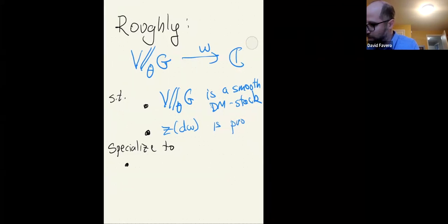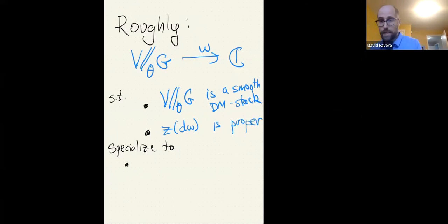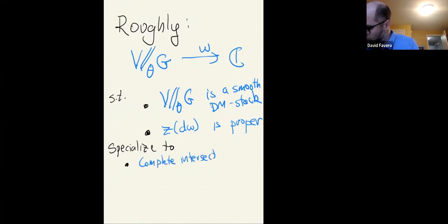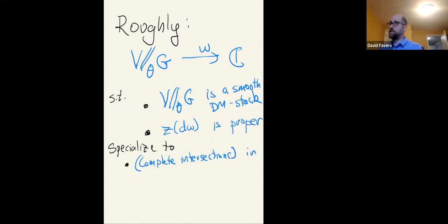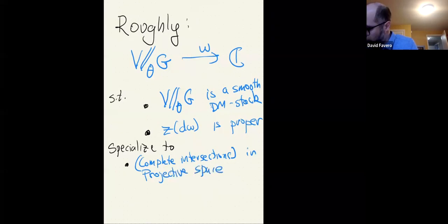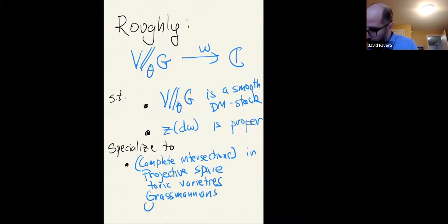Roughly, you can think of this as an affine GIT quotient with a superpotential, such that the requirements say that this GIT quotient is a smooth DM stack — not necessarily proper, usually not proper — but the critical locus is proper. These GLSMs specialize to complete intersections, or if W is zero, to projective spaces, toric varieties, Grassmannians, et cetera.